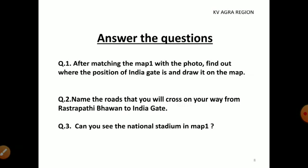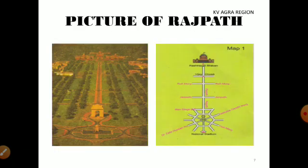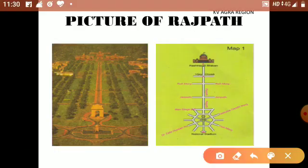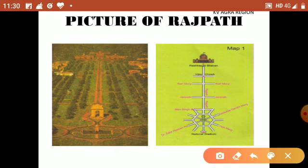Our third question is: can you see the National Stadium in map number 1? Let's look. Here you can see the National Stadium in map number 1. However, you cannot trace it in the actual image.